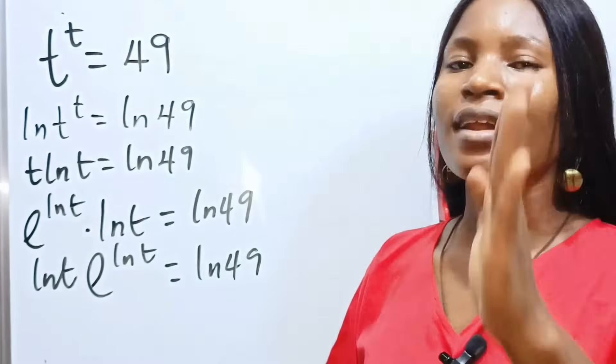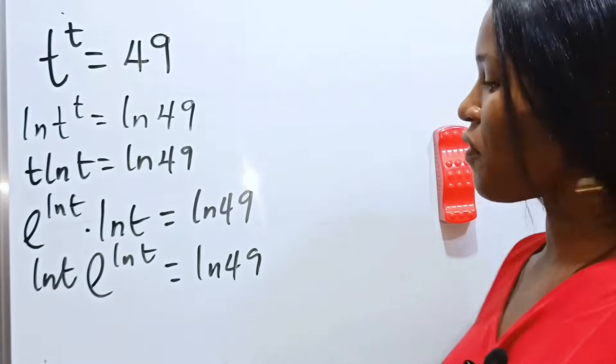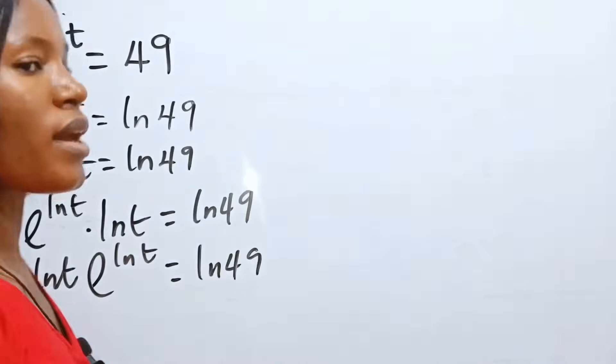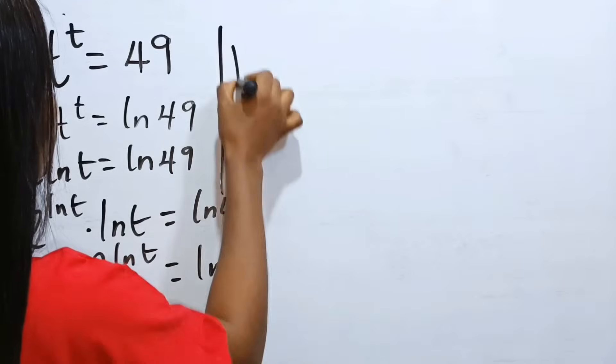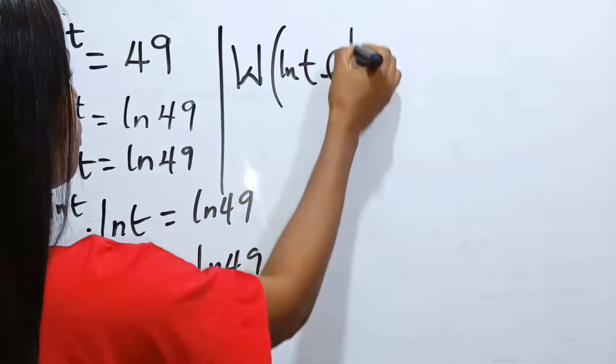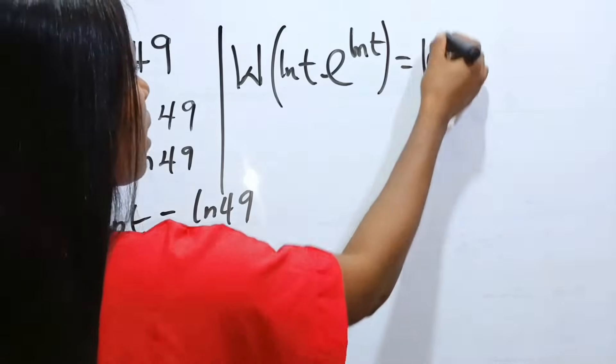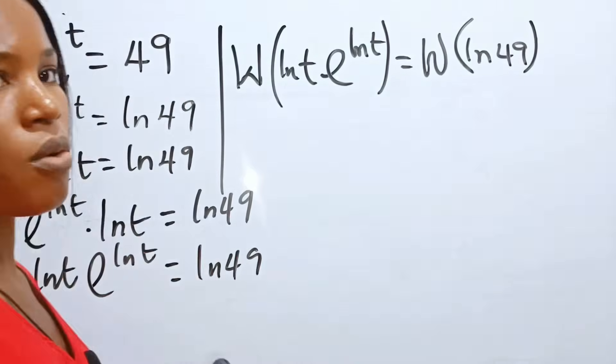Have you given us a thumbs up? Click on the subscription button as well if this is the first time you have seen us. Thank you very much. So, at this point, what we now have is the Lambert W function of ln t, e to the power of ln t, is equal to the Lambert W function of ln 49.